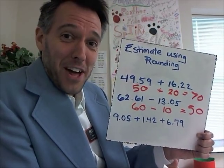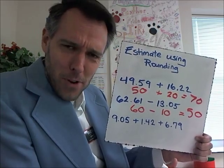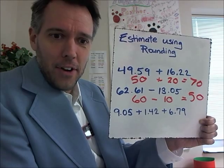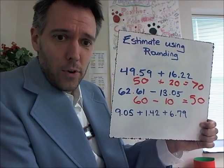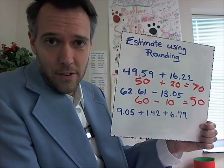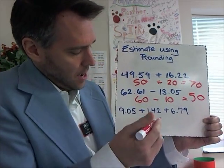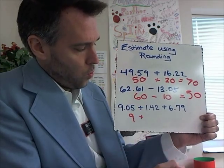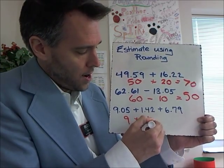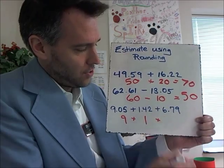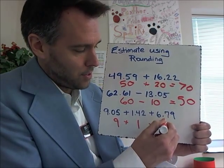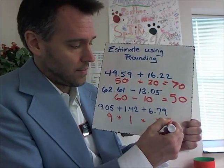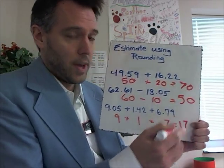I just got the big L sign from Miss Cassiato — she thinks I'm a loser; I'm talking to myself. But: 10 and 5 hundredths plus 1 and 42 hundredths plus 6 and 79 hundredths. Let's make these nice and easy. 10 and 5 hundredths will round down to 9. Plus 1 and 42 hundredths will round to 1. Plus 6 and 79 hundredths will round to 7. So we have 9 plus 1 plus 7, which gives us 17. And we have that one done.